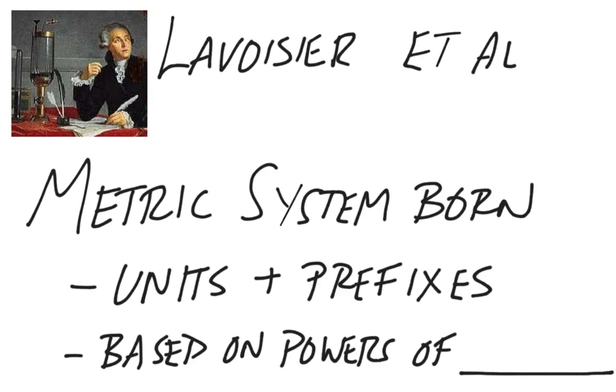Toward the end of the 1700s, Antoine Lavoisier, who we've talked about already this year, and others, started discussing a common system of measurement, and they developed what became known as the metric system. The metric system was born toward the very end of the 1700s.